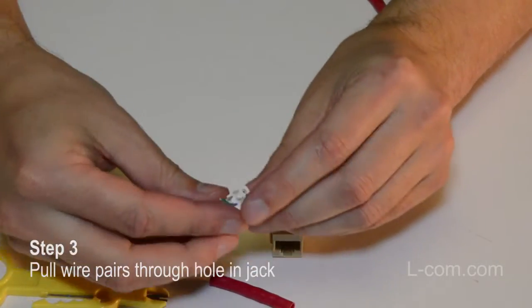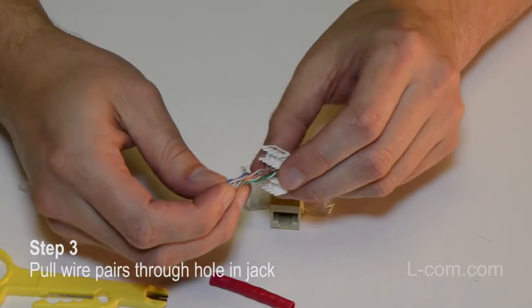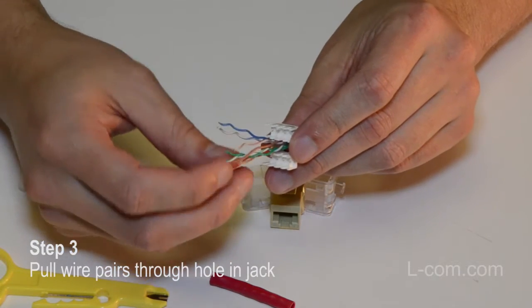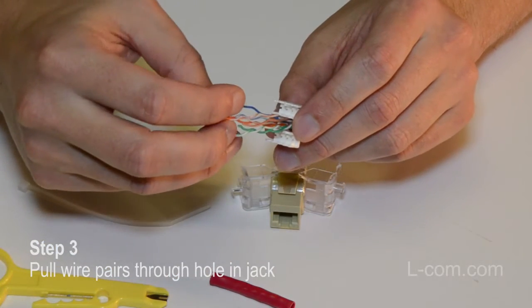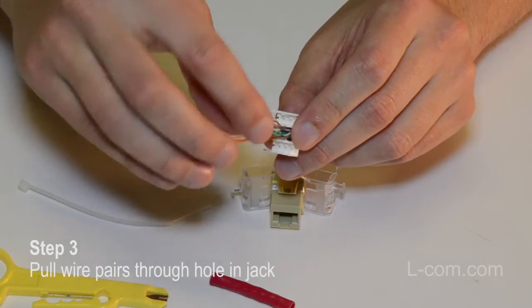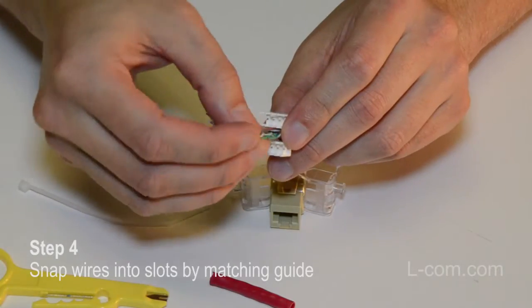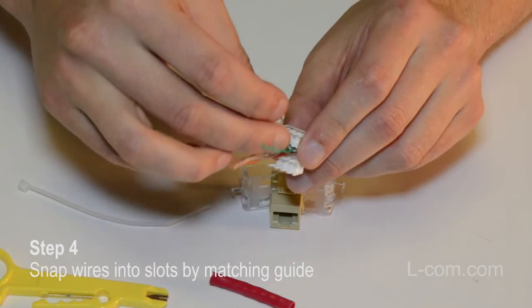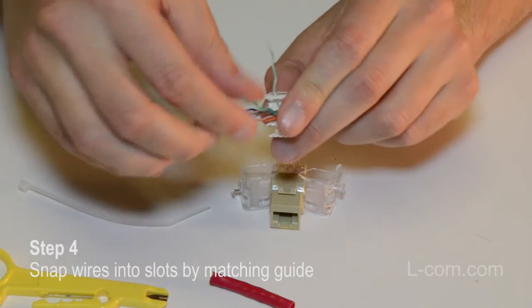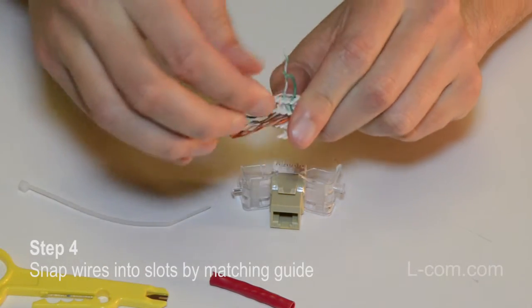Now you want to pull the wire pairs through the hole in the jack's wire guide. Next, you want to snap each wire into a slot by matching its insulation color clearly labeled on the guide.